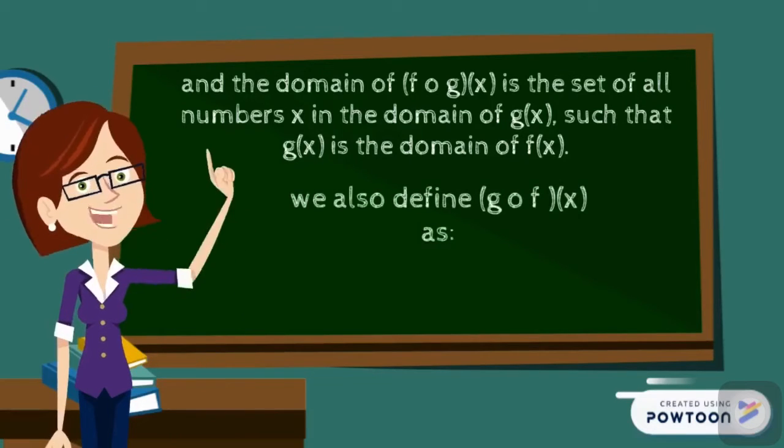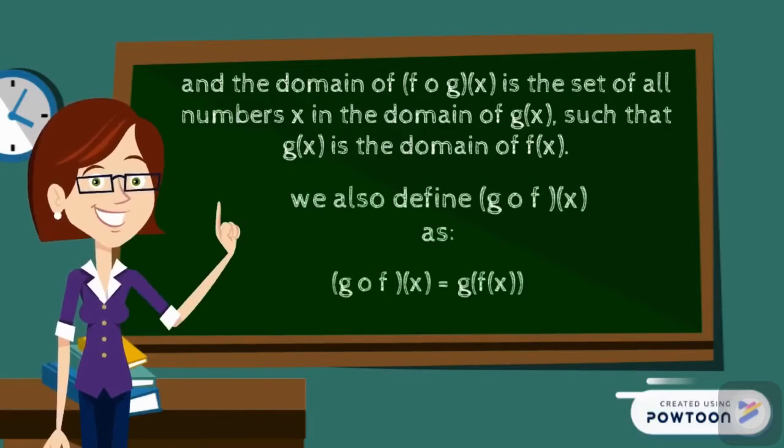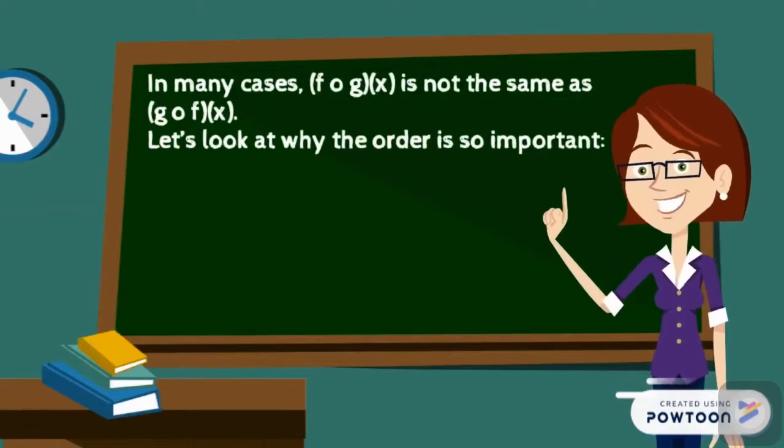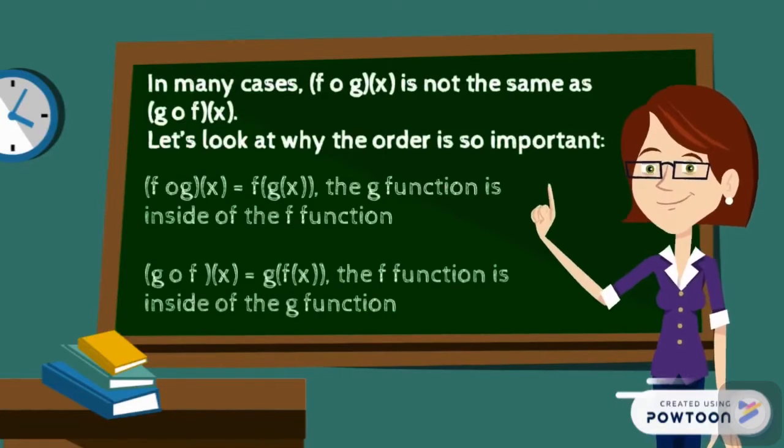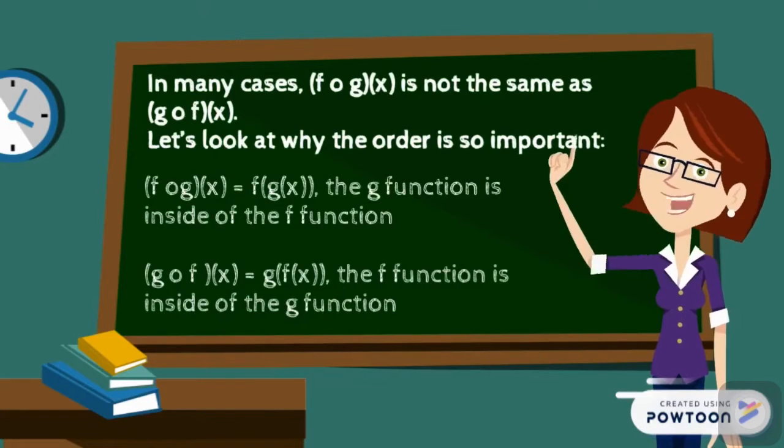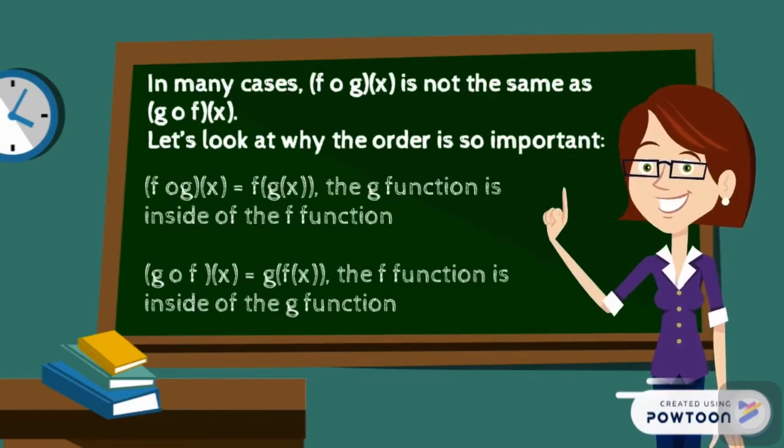Similarly, we also define (g o f) as this equation. In many cases, (f o g)(x) is not the same as (g o f)(x). Let's look at why the order is so important. (f o g)(x) equals f(g(x)), notice that the g function is inside of the f function. And (g o f)(x) equals g(f(x)), notice that the f function is inside of the g function.